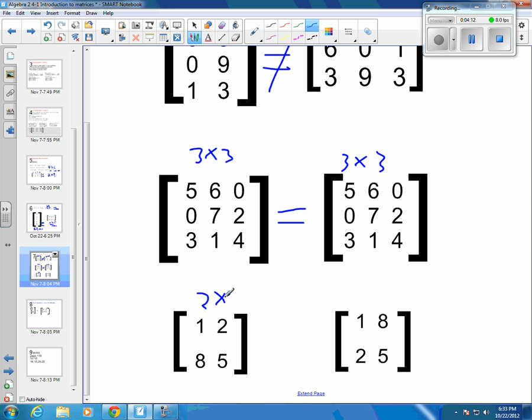This one, this is a 2 by 2, and this is a 2 by 2, but the 1 is in the same spot as the 1, but the 2 is not in the same spot as the 8, so this is also not an equal matrix. So hopefully that gets you your vocabulary through this section.